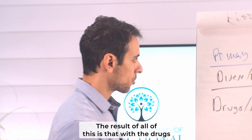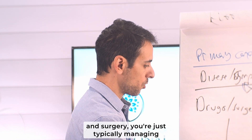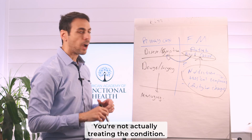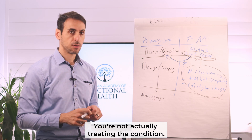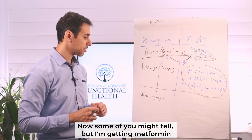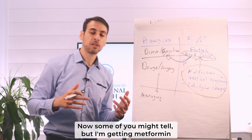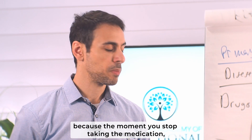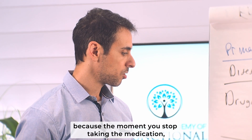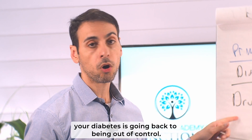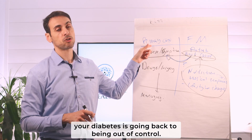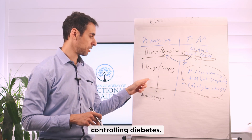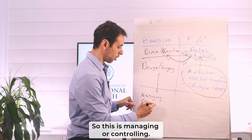The result is that with drugs and surgery, you're typically just managing a certain condition — you're not actually treating it. Some might say, 'But I'm getting metformin for my diabetes and that's supposed to treat my diabetes.' But it's not treating or curing it, because the moment you stop taking the medication, your diabetes goes back to being out of control. So what you're essentially doing is controlling diabetes — this is managing or controlling.